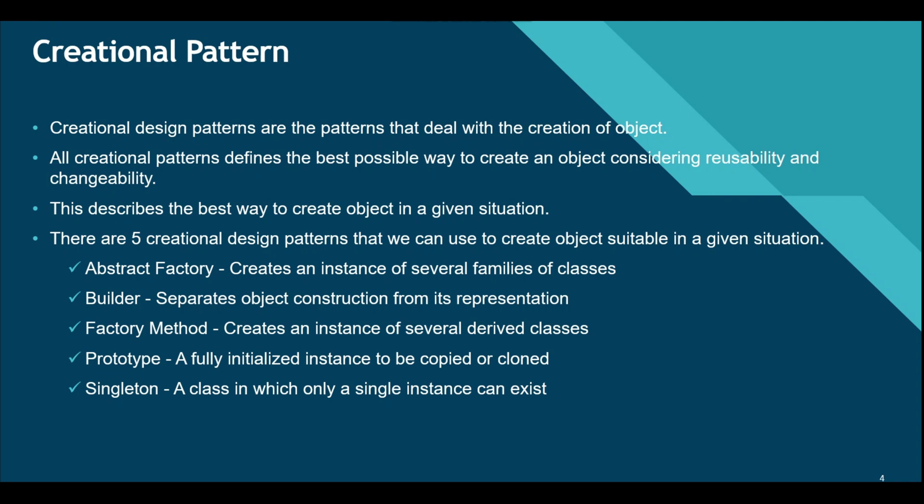We will cover these design patterns in detail in upcoming slides. The five creational patterns are: Abstract Factory, which creates an instance of several families of classes; Builder, which separates the object's construction from its representation; Factory Method, which creates an instance of several derived classes; Prototype, a fully initialized instance to be copied or cloned; and Singleton, a class in which only a single instance can exist.